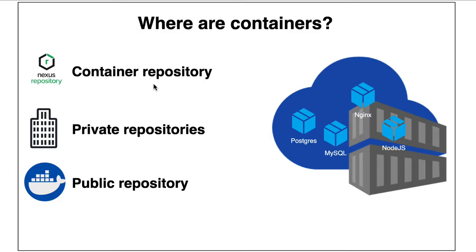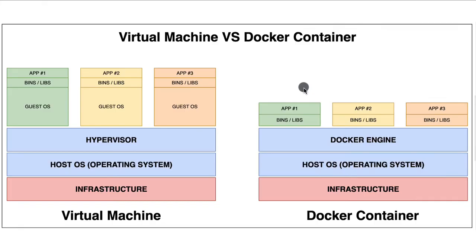There are three types of container registries: self-hosted registries like Nexus Repository, private repositories, and public repositories such as Docker Hub. When deploying a containerized application, the container runtime like Docker pulls the relevant container image from the specified registry, creates a container from the image, and runs it on the host system.